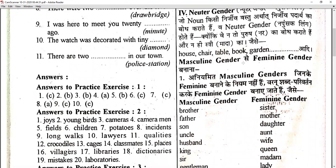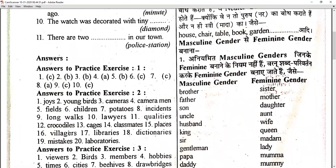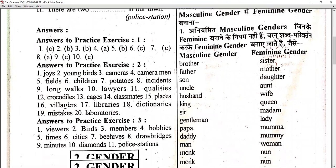Now, when we talk about forming the feminine gender from the masculine gender, there are some word changes. Some words — like brother/sister — the word itself changes completely, that is a complete change of the word.